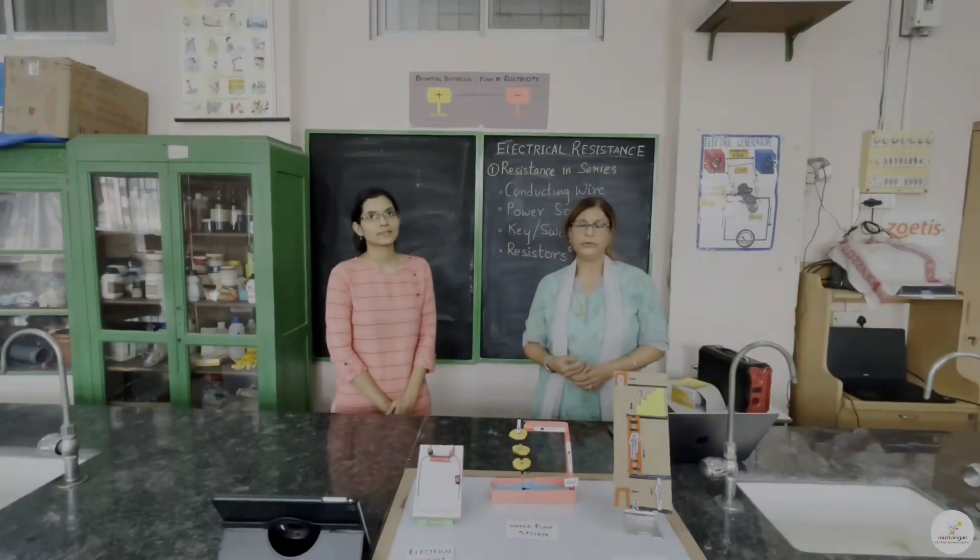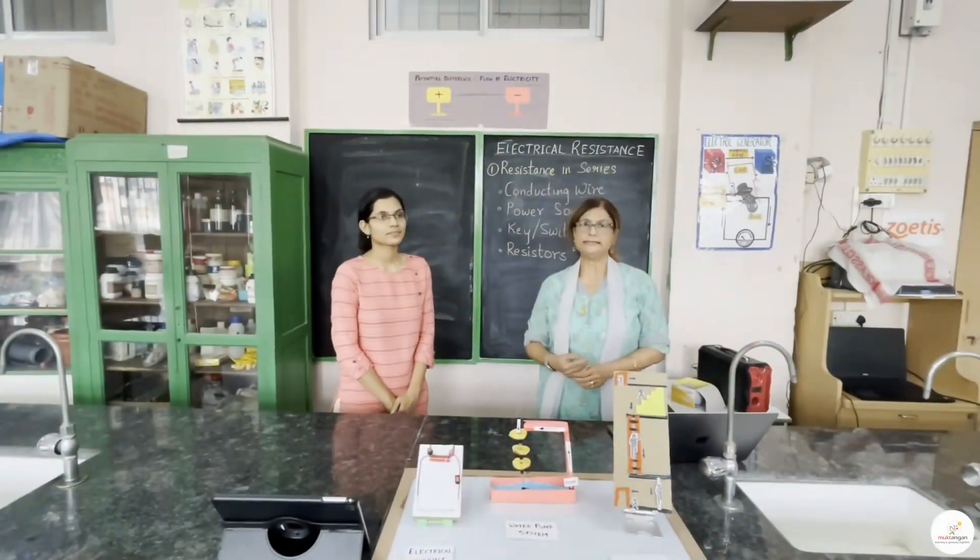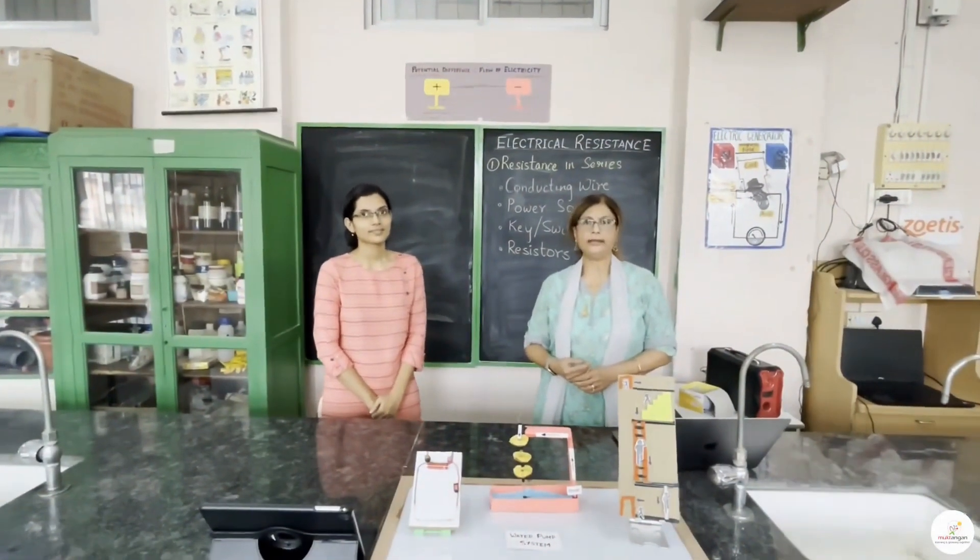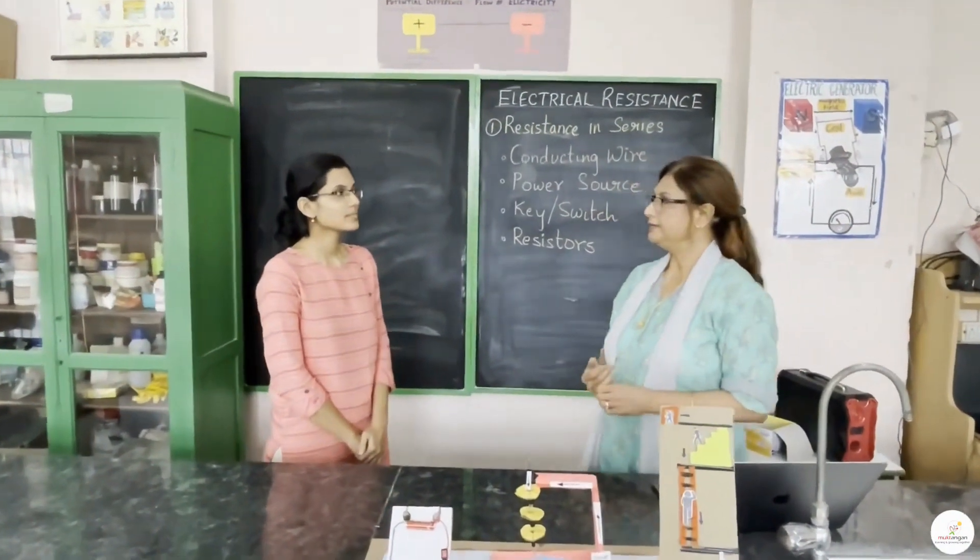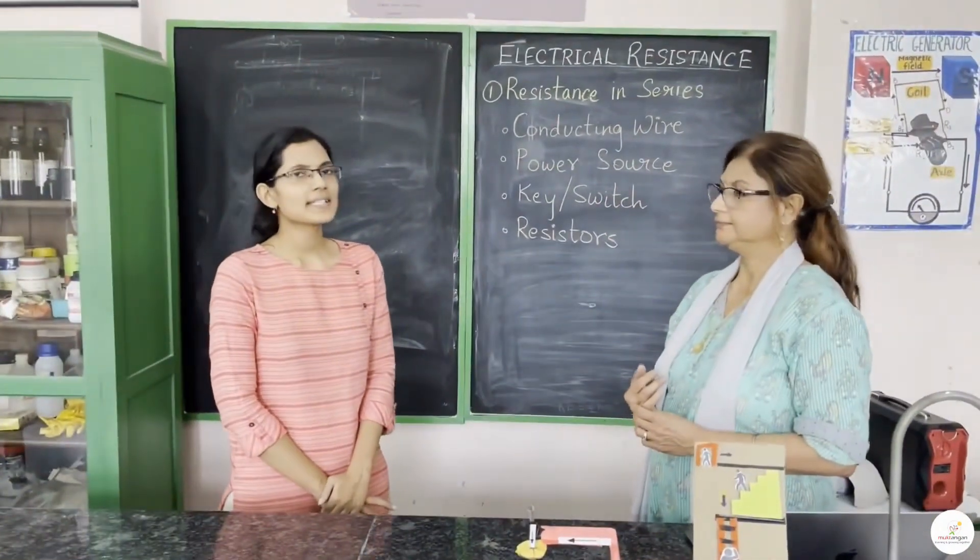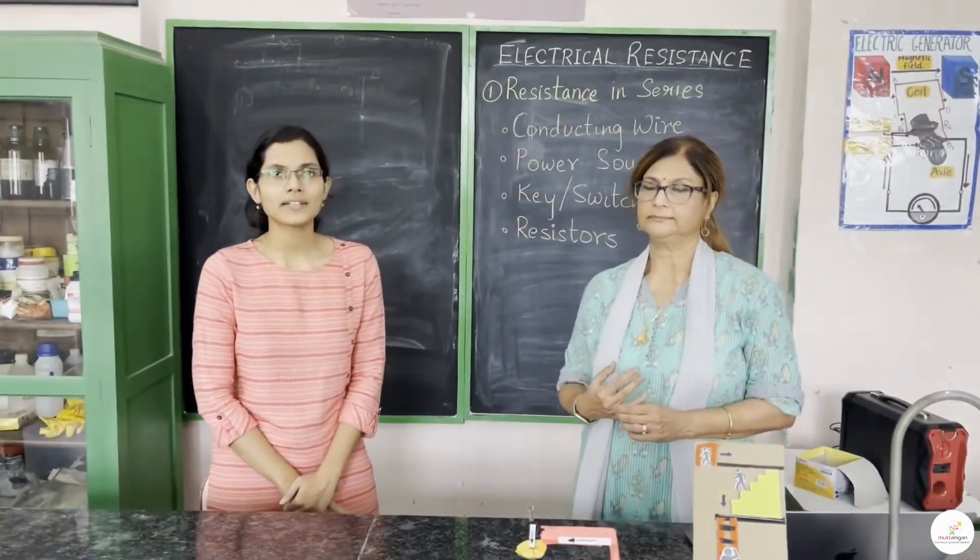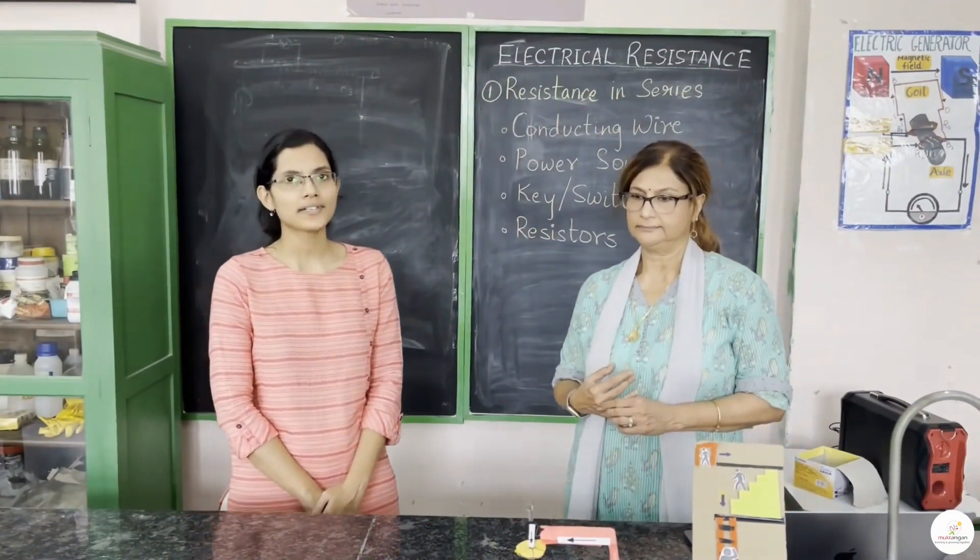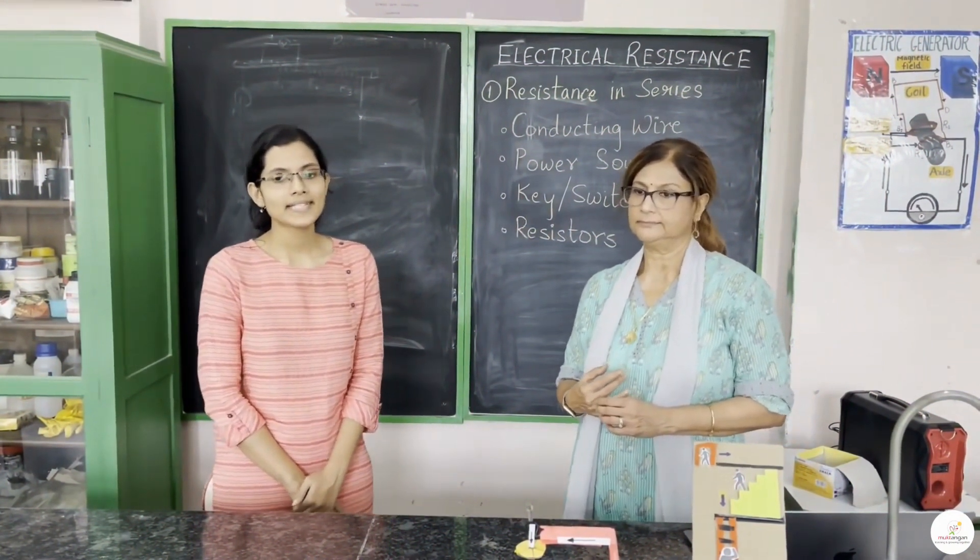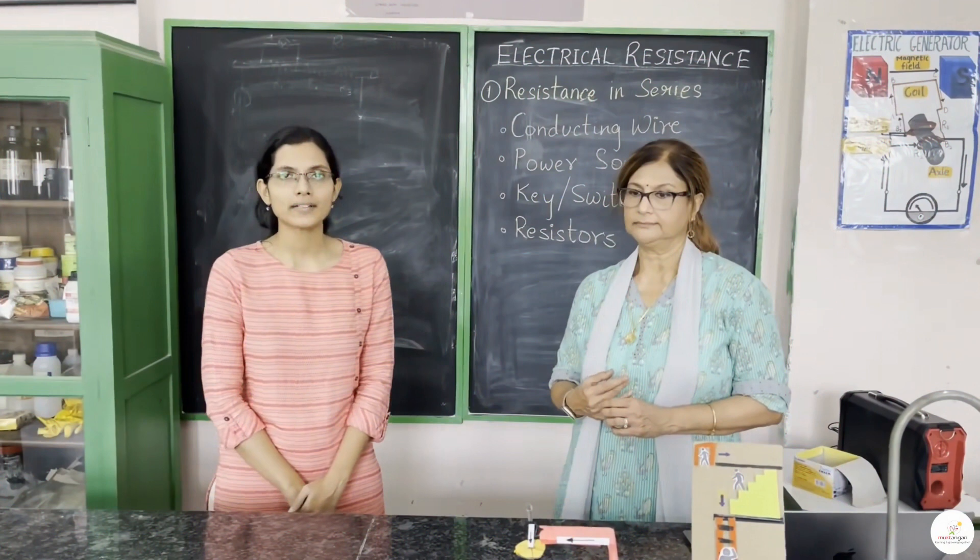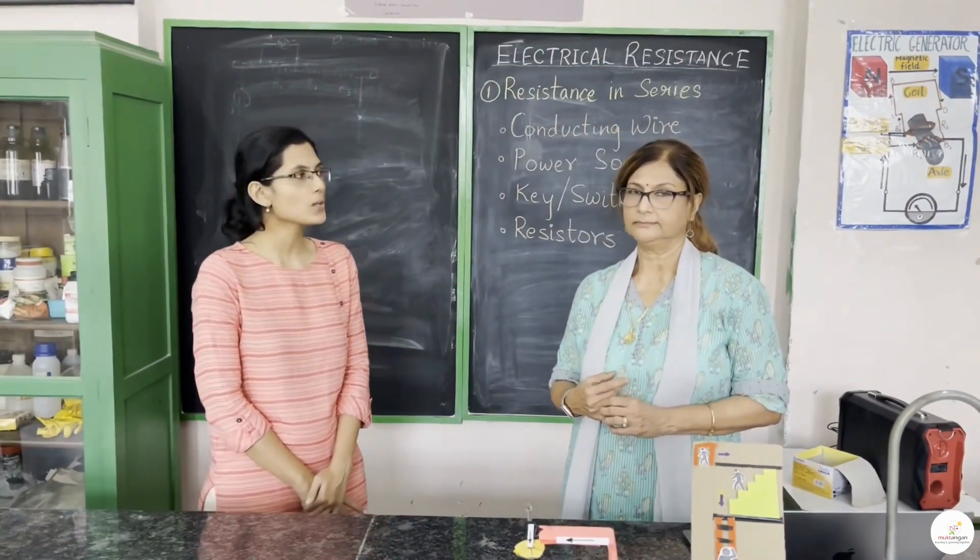In our previous video, we talked about electrical resistance. Let's do a quick recap. Can you define resistance? Resistance is the measure of how much current is opposed in an electrical circuit. Resistance is inversely proportional to current and its SI unit is ohm. That's correct.